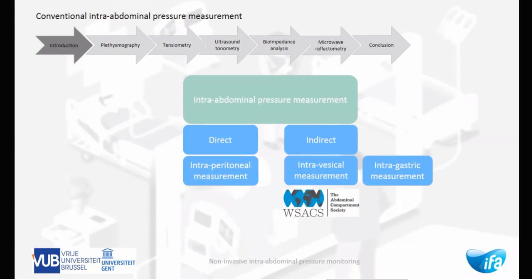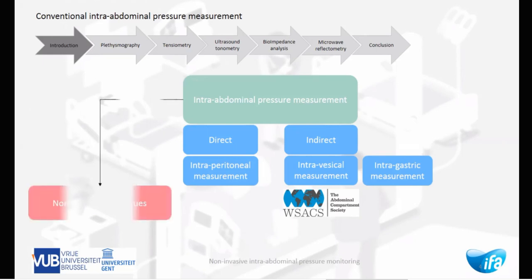Intravesical measurement is the reference standard for abdominal pressure monitoring. Although these techniques are reliable, accurate, and useful enough for critically ill inpatients, it might be a good idea to improve abdominal pressure monitoring in a way that allows continuous and non-invasive monitoring, to ultimately improve patient care in the ICU.